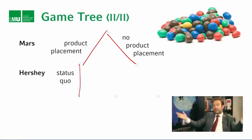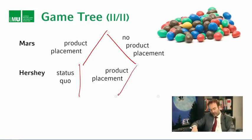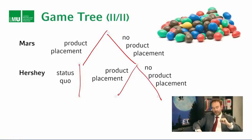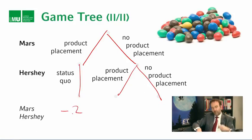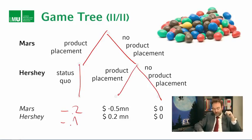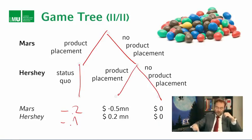After that, the decision came to Hershey's. If Mars signs the contract, Hershey's can't really do anything — it's just a question of maintaining the status quo. If Mars does not agree to the deal, then Hershey's has the choice between product placement or not. The payoffs if Mars signs: Mars gets minus $200,000 and Hershey's gets minus $100,000. If Mars doesn't sign but Hershey's signs, Mars loses $500,000 and Hershey's gains $200,000. If neither signs, both get zero.